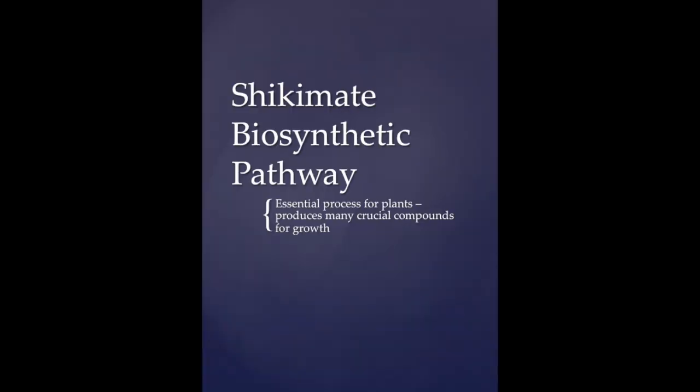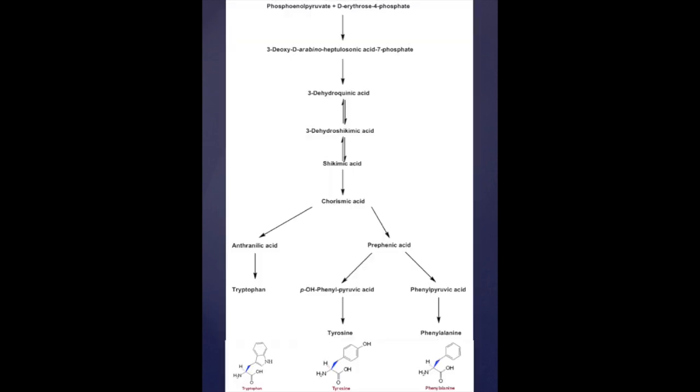The shikimate biosynthetic pathway is an essential process for plants because it produces many crucial compounds required for plant growth. This is the biosynthetic pathway, and as you can see, there are three main compounds.